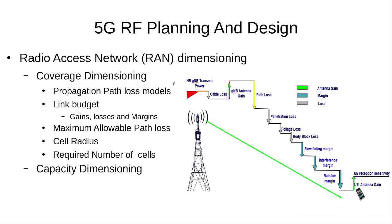Then we will go to the first step of 5G RF planning, which is the radio access network dimensioning. The radio access network dimensioning consists of coverage dimensioning and capacity dimensioning.